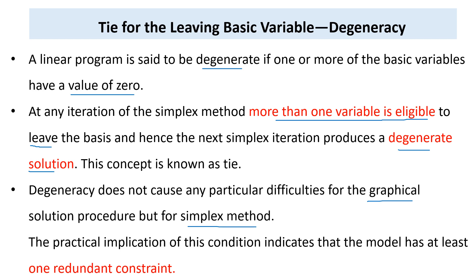That cycling may continue indefinitely. The practical implication of this condition — degeneracy — indicates that the model has at least one redundant constraint. A redundant constraint is one that, if removed, does not affect the feasible solution space. So we can remove redundant constraints without affecting the feasible solution space.